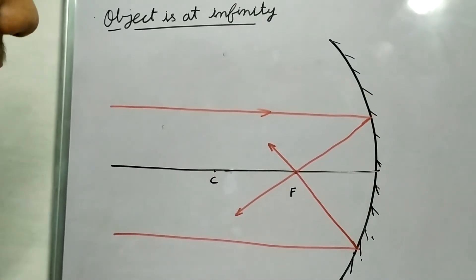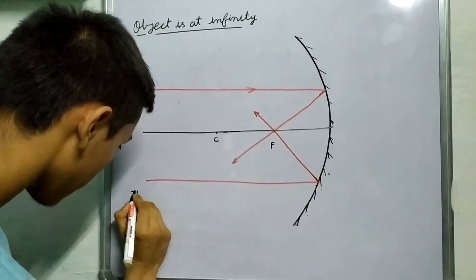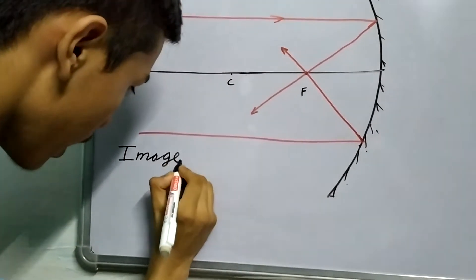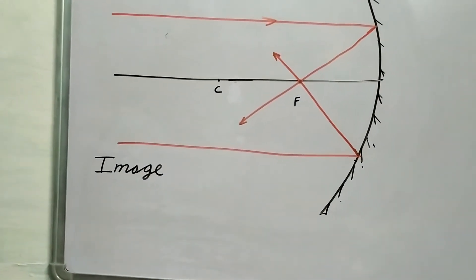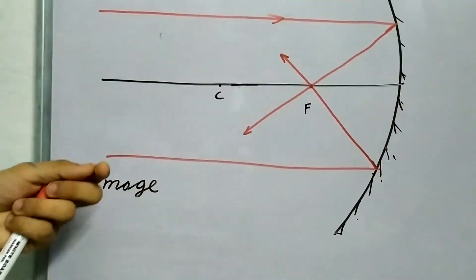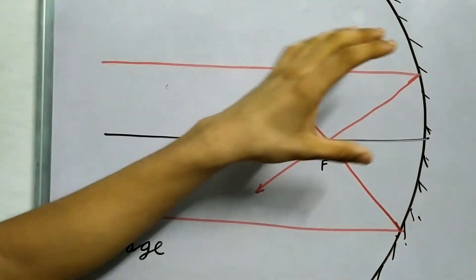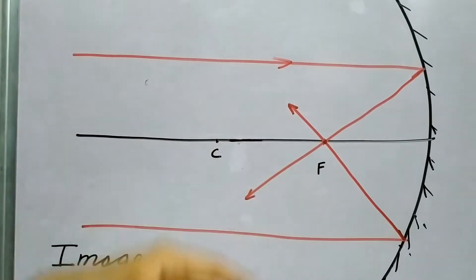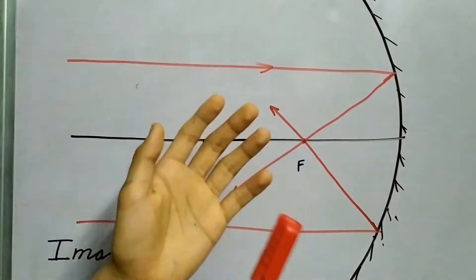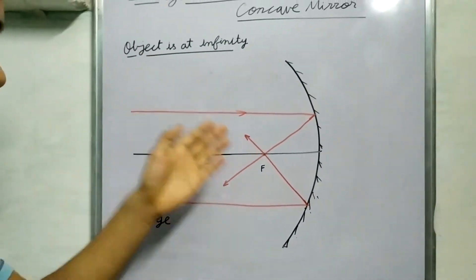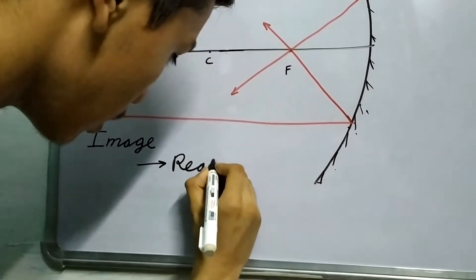Now what are the properties of this image? Let us discuss them. First, let us consider if it's real or virtual. If you think about it, rays are actually coming and meeting at a point — there's no case where it appears as if it's coming from somewhere else. The rays are actually meeting at a point. Therefore, the image is a real image.